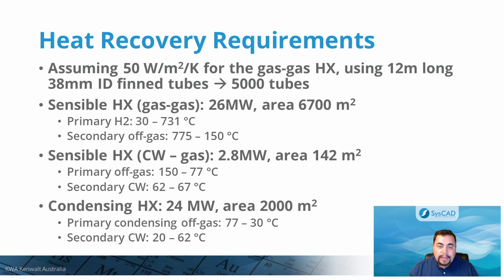Here is a summary of the heat recovery requirements for the three cooling stages. The highest requirement is for the high-temperature gas-to-gas heat exchanger, where 26 megawatts must be exchanged. Assuming 50 watts per square meter per kelvin transfer coefficient for the gas-to-gas exchanger, and using 12-meter-long 38 mm internal diameter fin tubes, this would result in about 5,000 tubes. If done as a single heat exchanger, it would need a tube plate of 3 by 5 meters, with an overall volume of approximately 180 cubic meters — about twice the size of a shipping container. The low-temperature heat exchanger using cooling water requires 2.8 and 24 megawatts respectively.